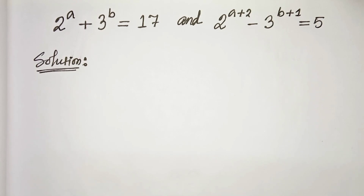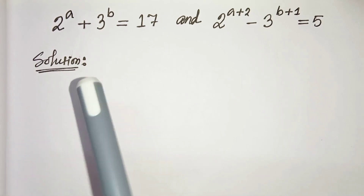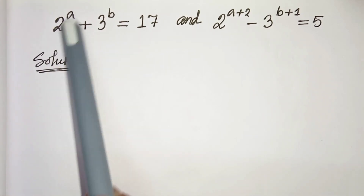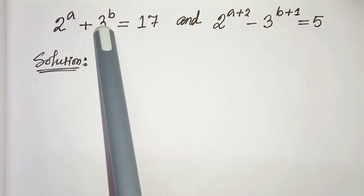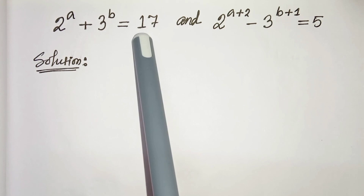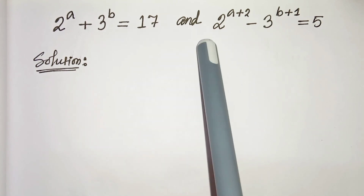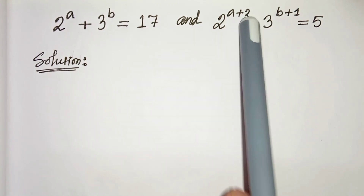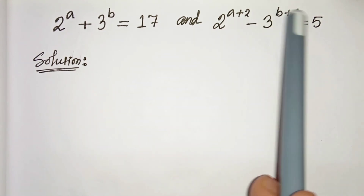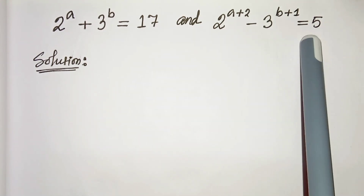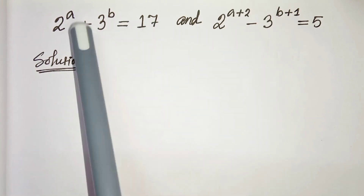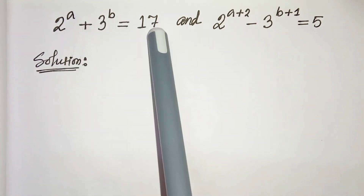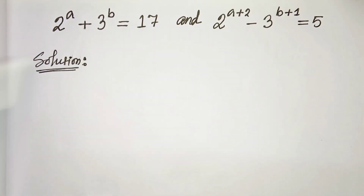Hello everyone. In this video we have two linear equations: 2 to the power a plus 3 to the power b equals to 17, and 2 to the power a plus 2 minus 3 to the power b plus 1 equals to 5. We have to solve and find the values of a and b. So let's start.